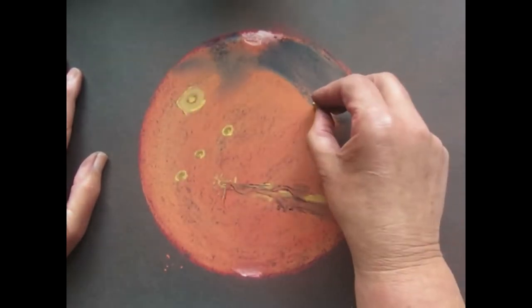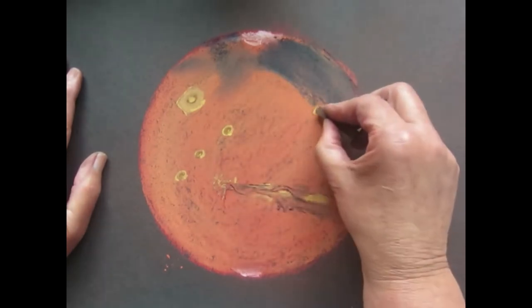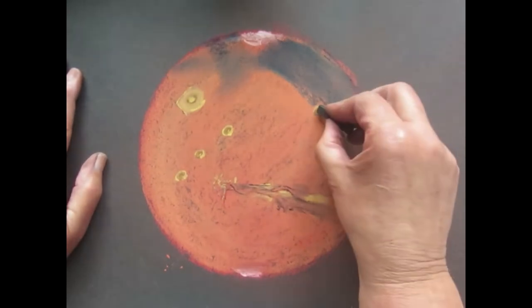The dark markings are where the Martian wind has blown the red dust completely off, leaving rocky material exposed.